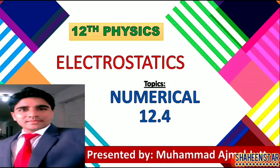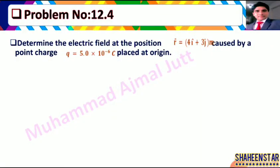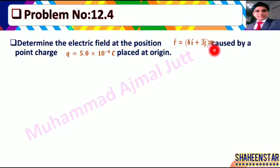Assalamu alaikum everyone, I am Muhammad Ajmal and welcome to my channel. In this video we will solve Numerical 12.4 of Chapter 12. The statement is: determine the electric field at the position r = 4i + 3j meters caused by a point charge q = 5.0 × 10⁻⁶ coulomb placed at the origin.